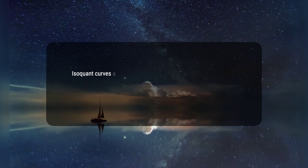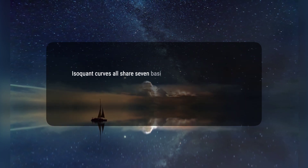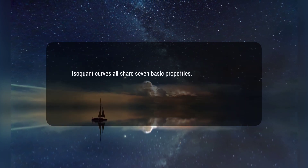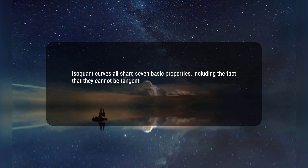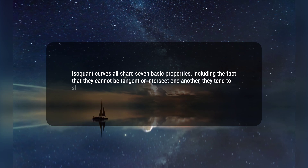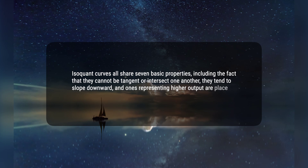5. Isoquant curves all share seven basic properties, including the fact that they cannot be tangent or intersect one another, they tend to slope downward, and ones representing higher output are placed higher and to the right.